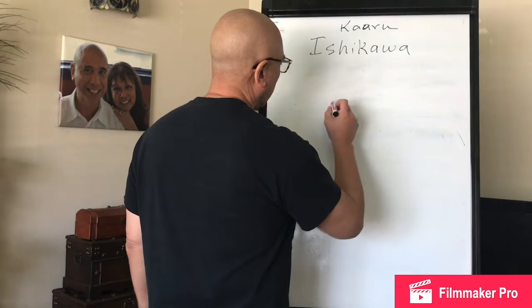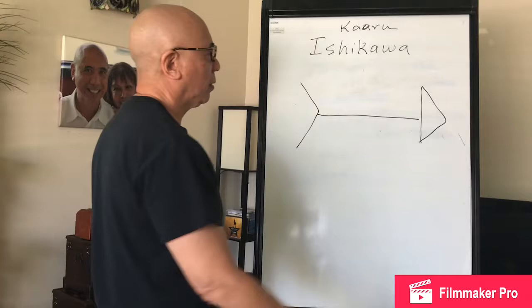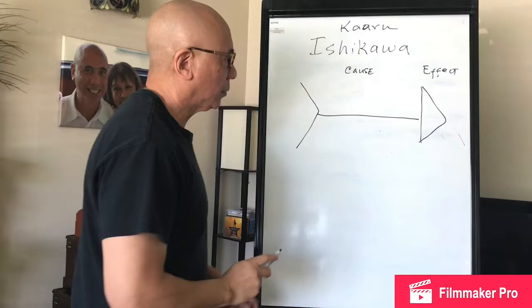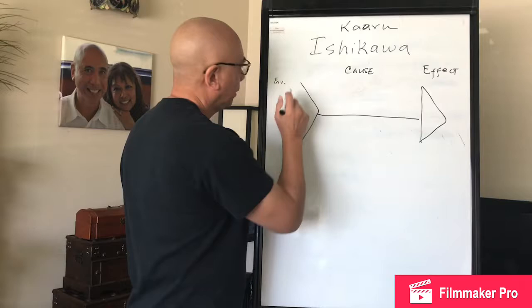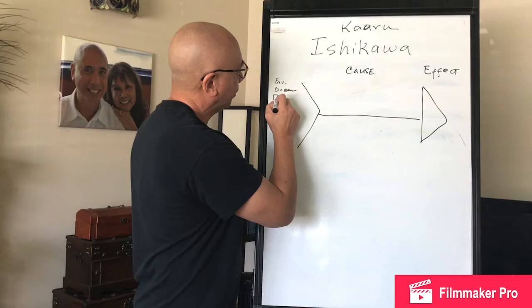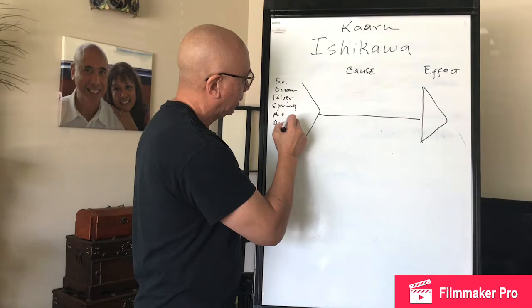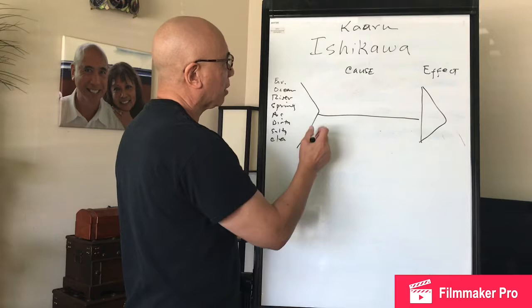I'm going to draw a picture. This is a fish's head and this is a tail. From a cause-and-effect standpoint, this is the effect and this is the cause. Now, a fish has to live in a body of water, and that would be considered the environment — ocean, river, spring, aquarium — and that environment could be dirty, salty, or clear.